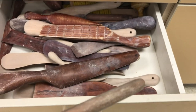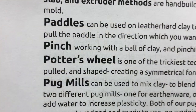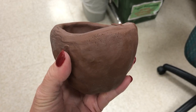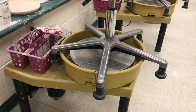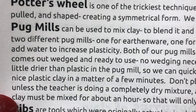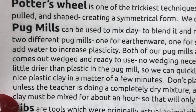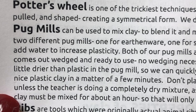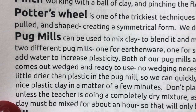Paddles are used to sometimes alter and shape a form as you build it. Pinch is what we did on our pinch cups — you take a ball of clay and pinch it. Potter's wheels are located in the back of the room. The pug mills, although we're not really using them this year, are used to recycle clay. When we don't have COVID going on, we'll be using them again.